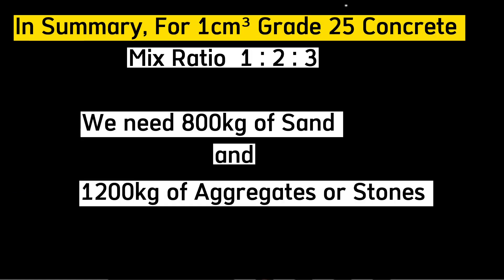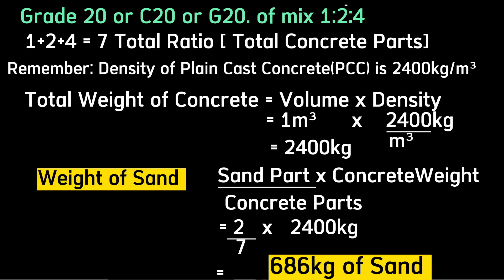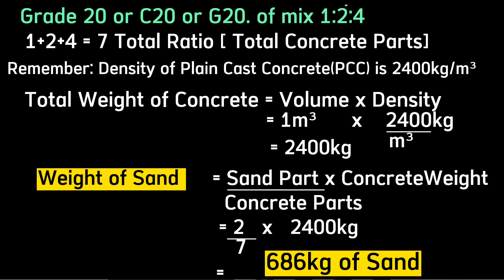In summary, we need 800 kilograms of sand and 1200 kilograms of aggregates to cast one cubic meter of Grade 25 concrete with mix ratio 1:2:3. For a different mix ratio such as Grade 20 with mix ratio 1:2:4, the total parts will be 7 — one part cement, two parts sand, and four parts aggregates.